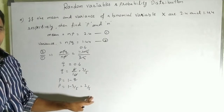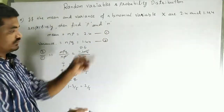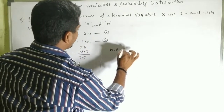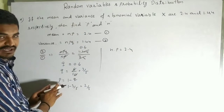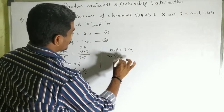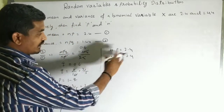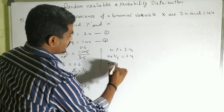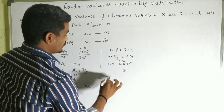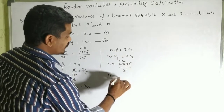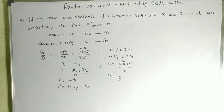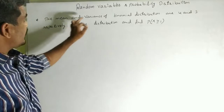Now we find n. We know np = 2.4 and p = 2/5. Substituting: n × (2/5) = 2.4, so n = 2.4 × (5/2) = 1.2 × 5 = 6. Therefore n = 6.